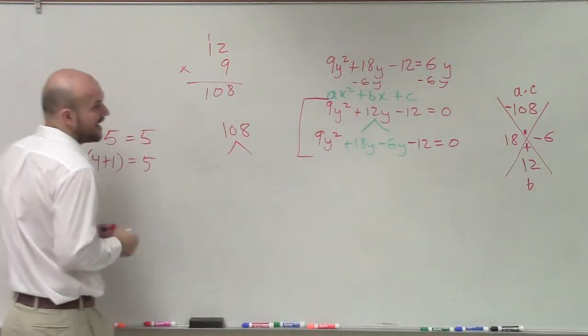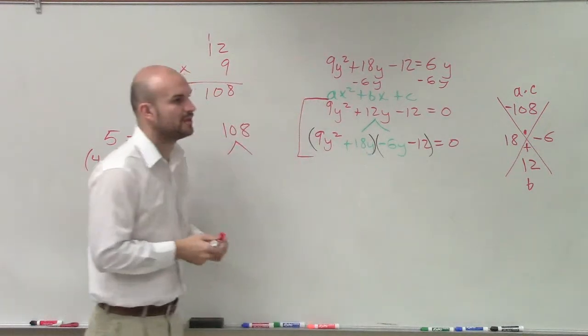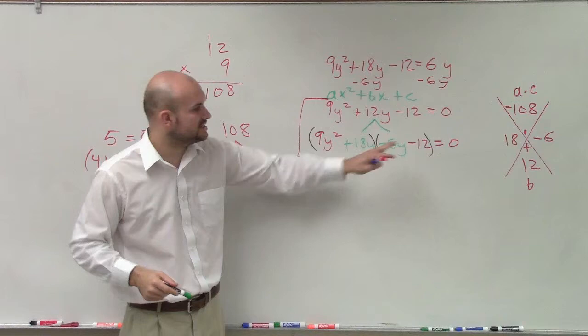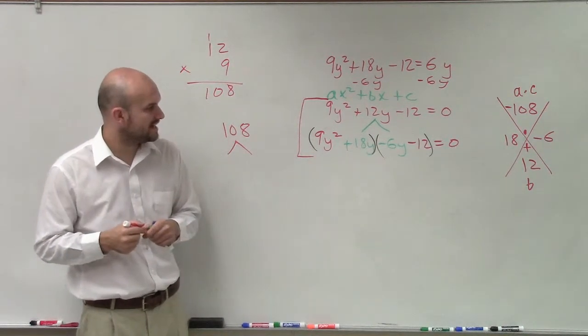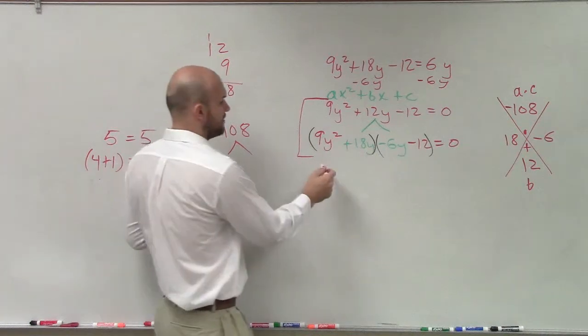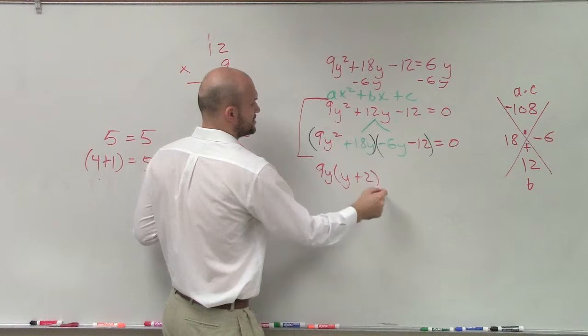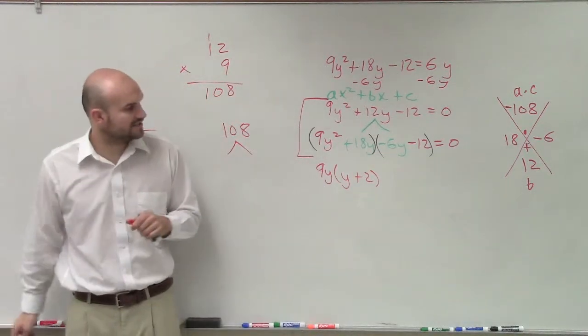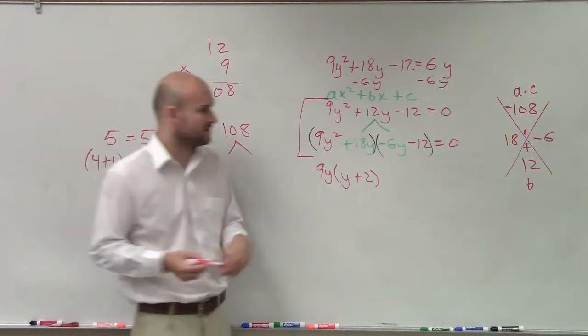So when I apply grouping, now I say what is the GCF of each one of these terms? So what is the GCF of 9y² + 18y? It's going to be 9y. When I factor out 9y, I'm left with y + 2. And then I say what can I factor out of -6y - 12? And I can say I can factor out a negative 6.